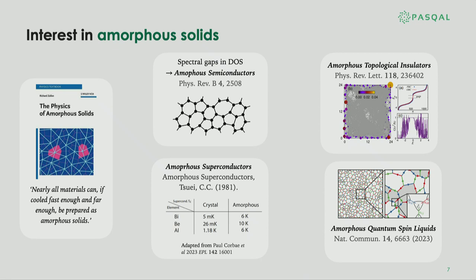There is a lot of interest in amorphous solids. All materials become amorphous if cooled fast enough. There is interest in amorphous semiconductors because they can have gaps, in superconductors because amorphicity affects critical temperature, and more recently — in the last five to ten years — in topological materials, where the question is whether short-range order is sufficient to generate topology. The answer is yes, topological states can appear. There is also very recent interest in spin liquids arising in amorphous materials.